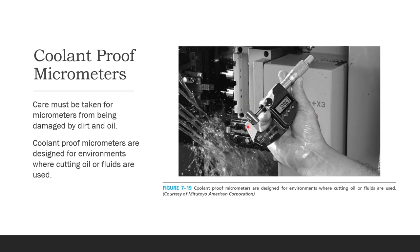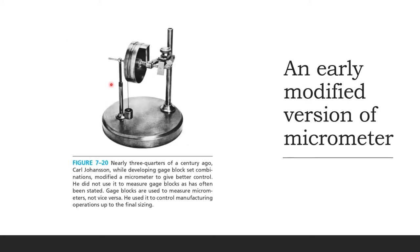Coolant-proof micrometers are designed for environments where oil or fluids are often used, and care must be taken to prevent damage from dirt or oil. Historically, nearly three-quarters of a century ago Carl Johansson developed gauge block sets. He modified the micrometer to give better control; importantly, he used gauge blocks to measure micrometers — not micrometers to measure gauge blocks — to control manufacturing operations up to final sizing.